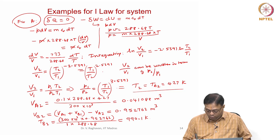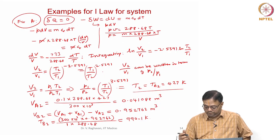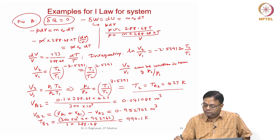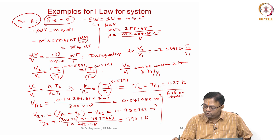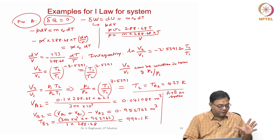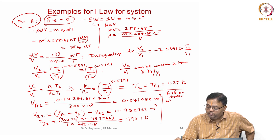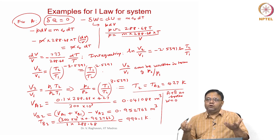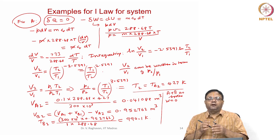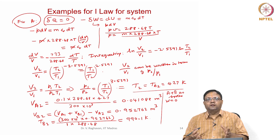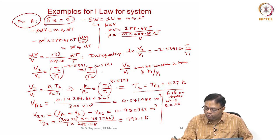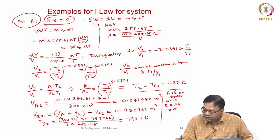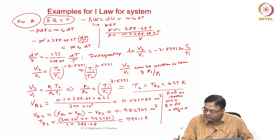Now take A plus B as the combined system. The total volume is constant — the piston only moves internally — so W = 0. There is no external heat transfer since only the right wall of B exchanges heat. So Q = delta U.